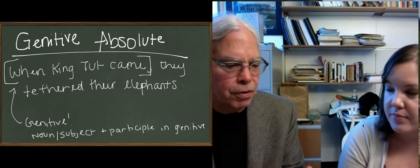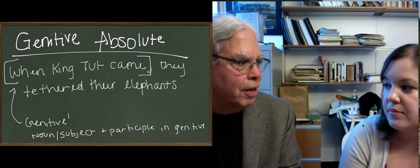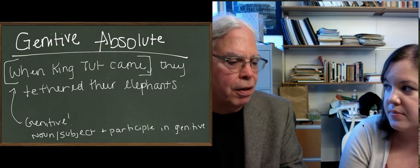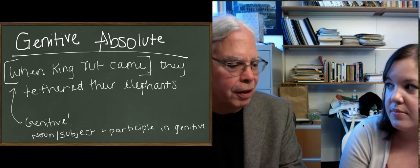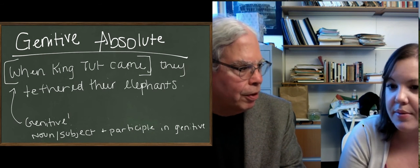And there can be other nouns because that noun can be the subject of a genitive absolute. So, you can say when King Tut built the pyramid, the pyramid is going to be the direct object of the genitive participle.